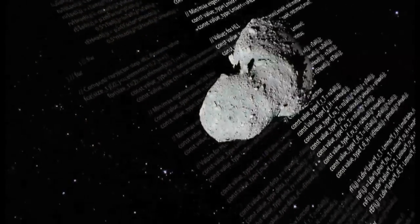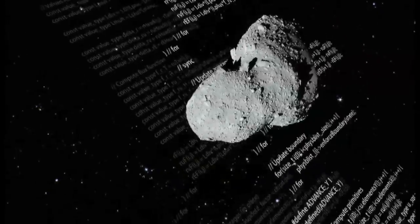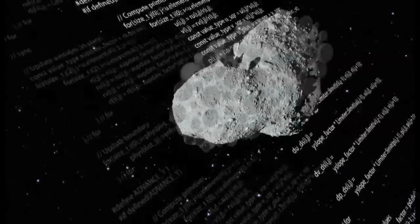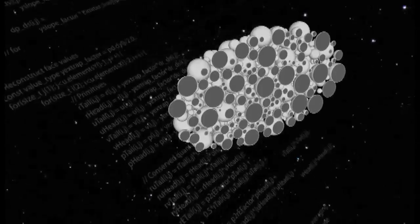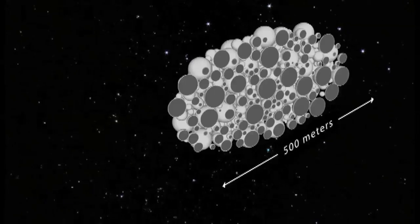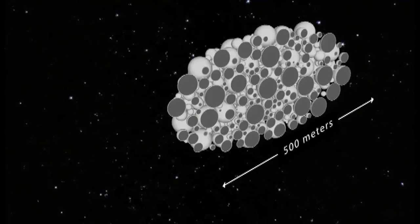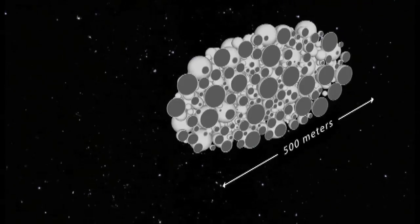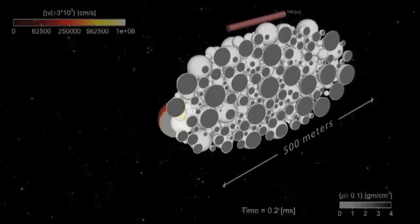This geometry is representative of what we believe the internal structure of an asteroid is. This is actually in the shape of the Itokawa asteroid. These are all granite rocks. The entire size of this asteroid is half a kilometer. It's 500 meters from end to end. It's about 250 meters from side to side.